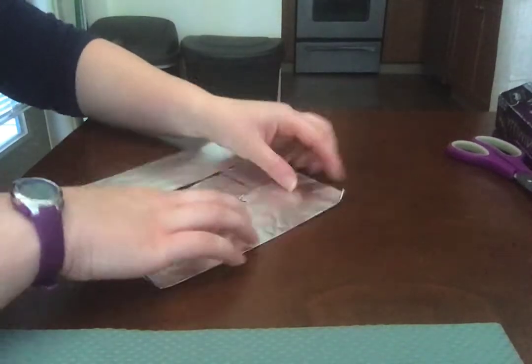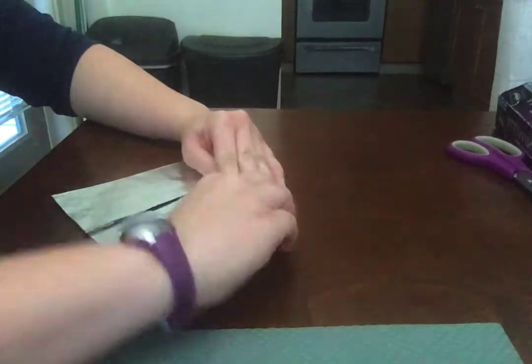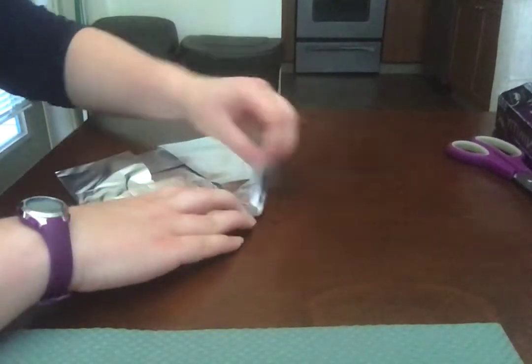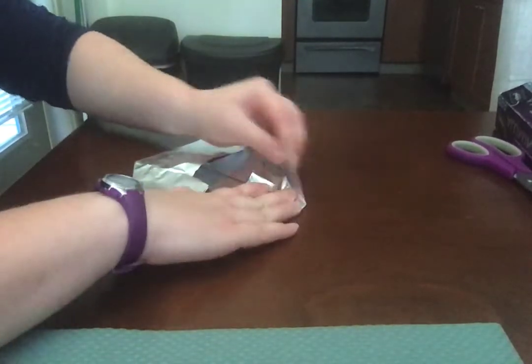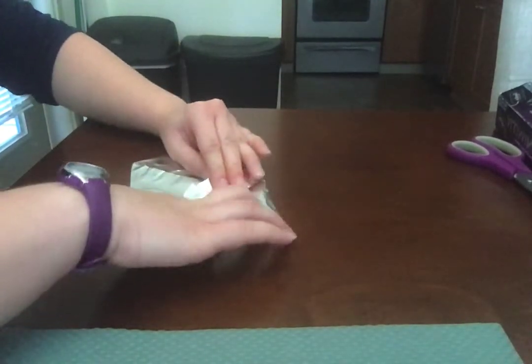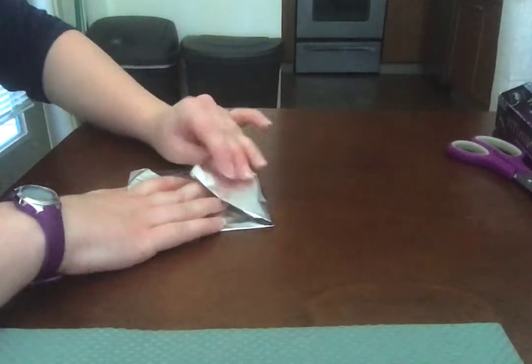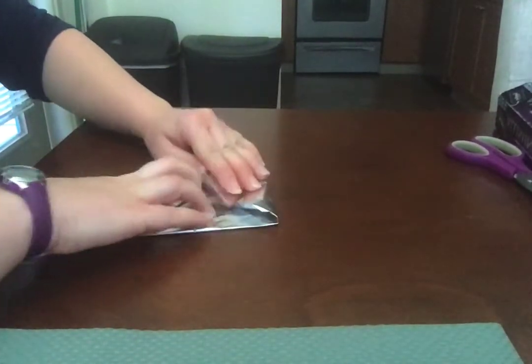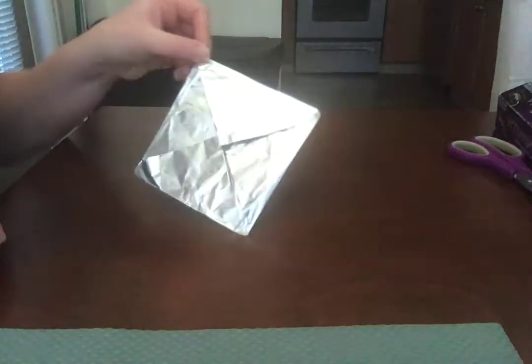So next we're going to fold in the corners here. Again, it doesn't have to be perfect, just has to be relatively square. Should look like this.